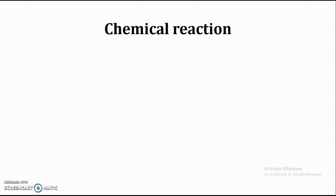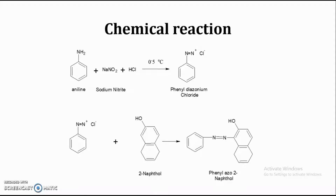First, we are going to see the chemical reaction involved in the synthesis of phenyl azo-2-naphthol and what is the principle involved in this particular synthesis. Here, we are going to carry out the synthesis of phenyl azo-2-naphthol from aniline, where aniline is reacted with sodium nitrite and hydrochloric acid, which leads into the formation of phenyl diazonium chloride with the help of the diazotization reaction. What is the meaning of diazotization reaction?